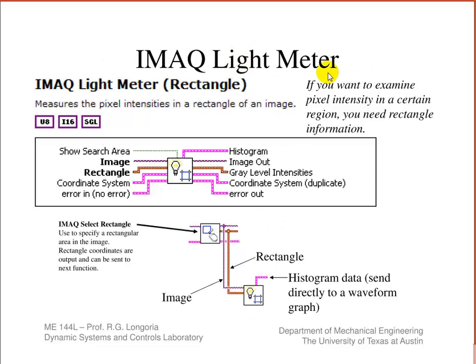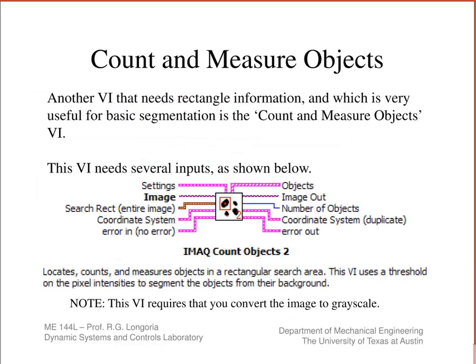Another very useful VI is the Light Meter. It takes an image and processes it to give you histogram data so you can interrogate the intensity levels. For example, if you have a grayscale image and want to look at only certain pixel intensities, this helps you identify what those actual values are — you can use the histogram to focus in on the right intensity levels.